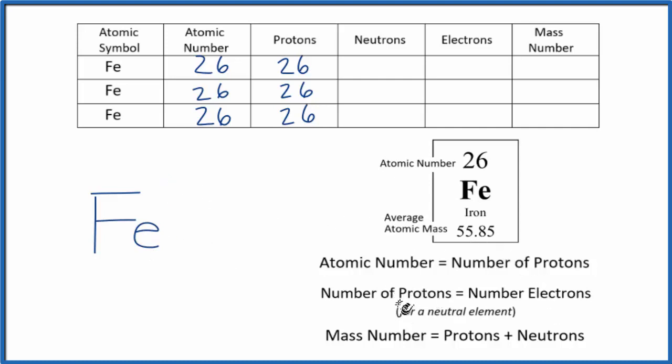So if it's a neutral compound, the number of protons equals the number of electrons. So if we have 26 as our atomic number, we have 26 protons. Since this is neutral, we have 26 electrons. That doesn't matter for which isotope of iron we have. It's always 26 when it's neutral.